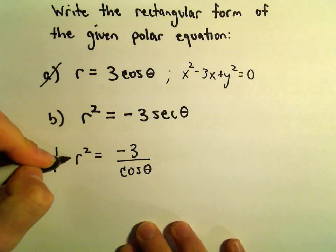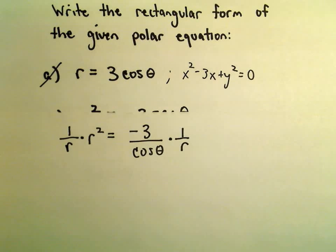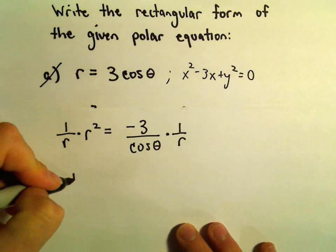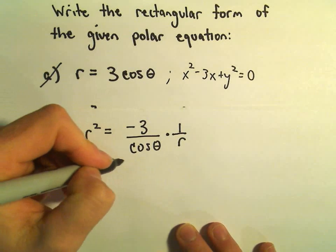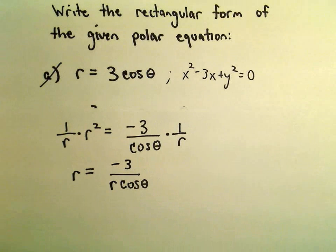Equivalently, we'll multiply both sides by 1/r. So on the left, r²/r would just give us r. We would have -3/(r·cos(θ)). And now we can start substituting things in.